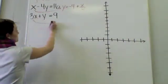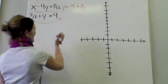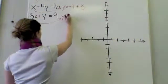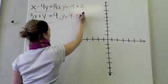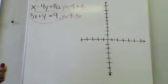This other one's easy. All I've got to do is bring the 3x over. So my slope-intercept form is y equals 9 minus 3x. All right, so to graph these,